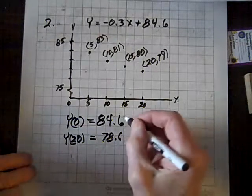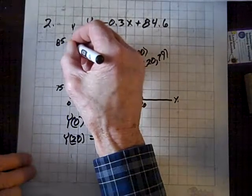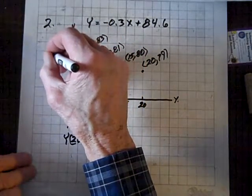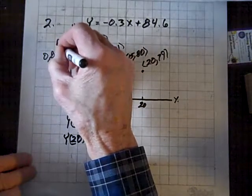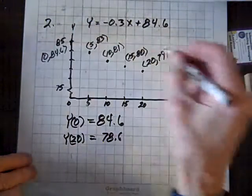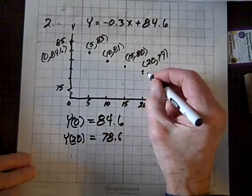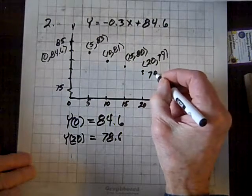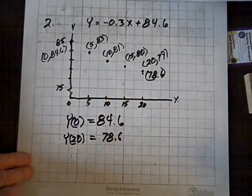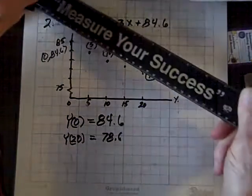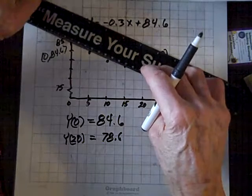And that is going to be a percentage. So, let's make a mark at 0, 84.6, and at 20 and 78.6. And now we'll take a ruler, and we'll draw a best fit line through those two data points.